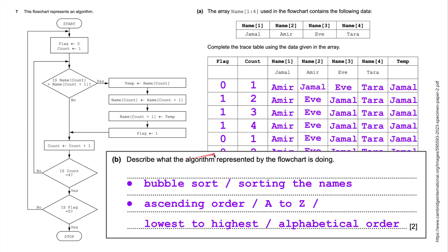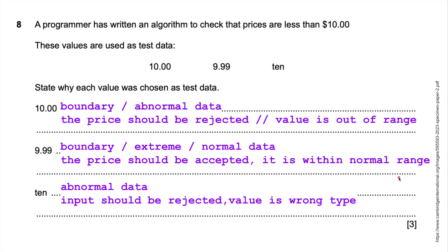So I've put this in here. Describe the algorithm represented by the flow chart. And what it's doing, it's a bubble sort. It's sorting the names into ascending order, A to Z order, the lowest to the highest alphabetical order. So that's how you would answer question seven. Seven marks for that. So that's rather a lot.